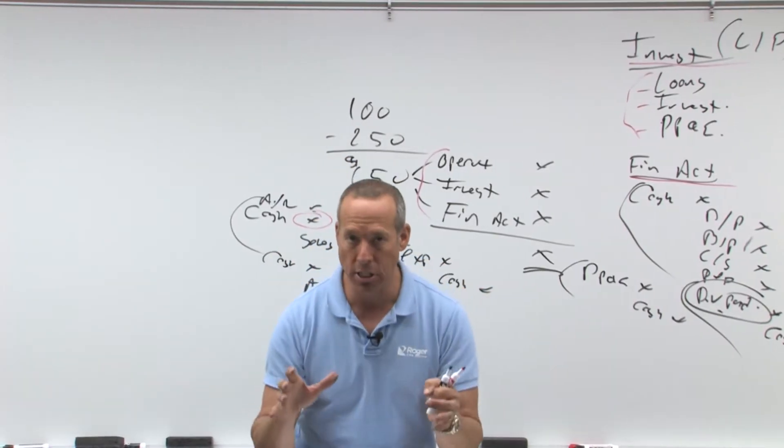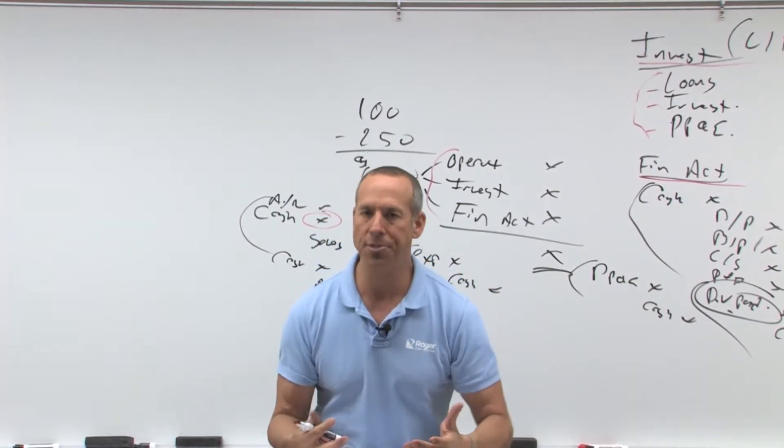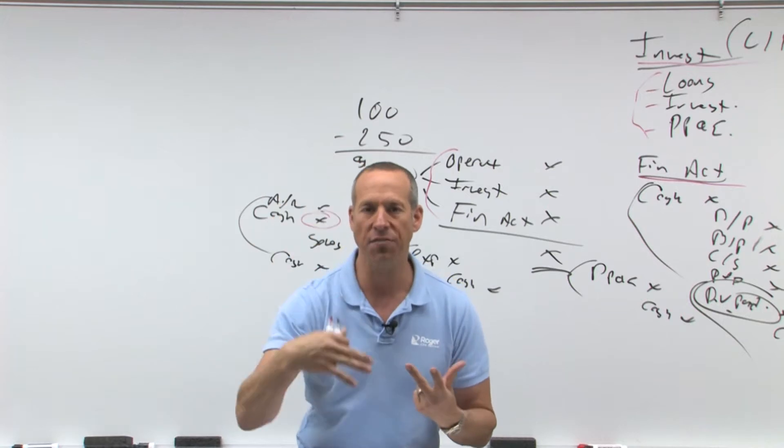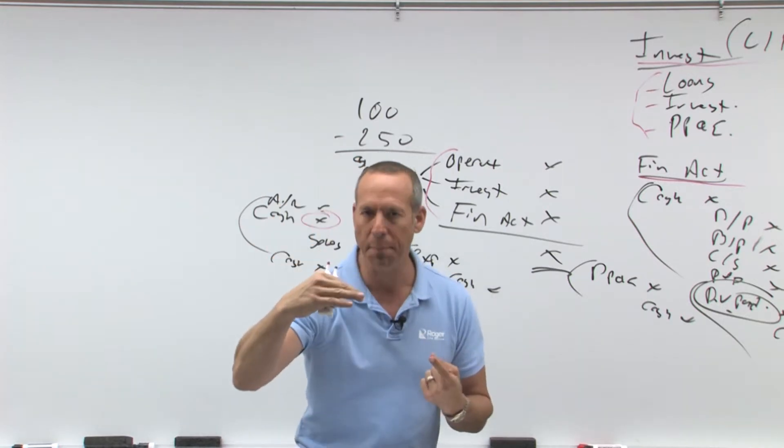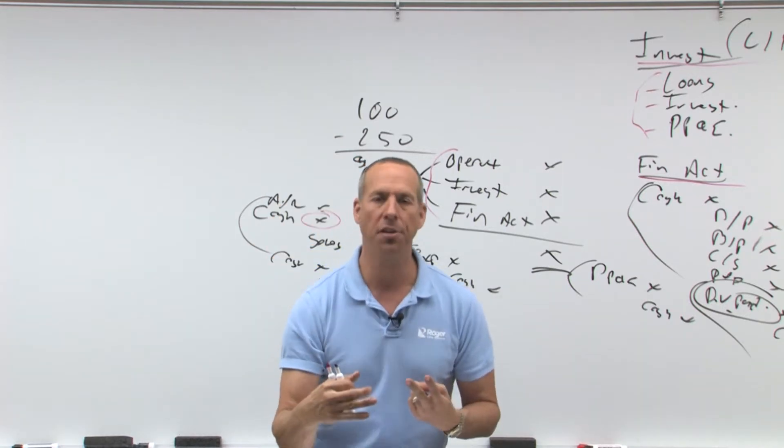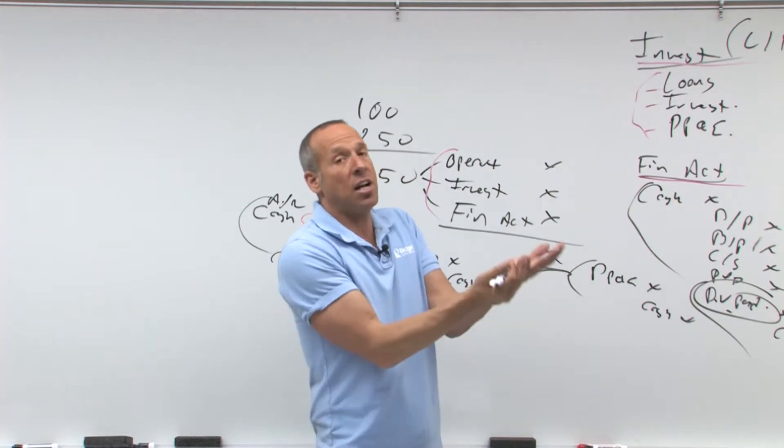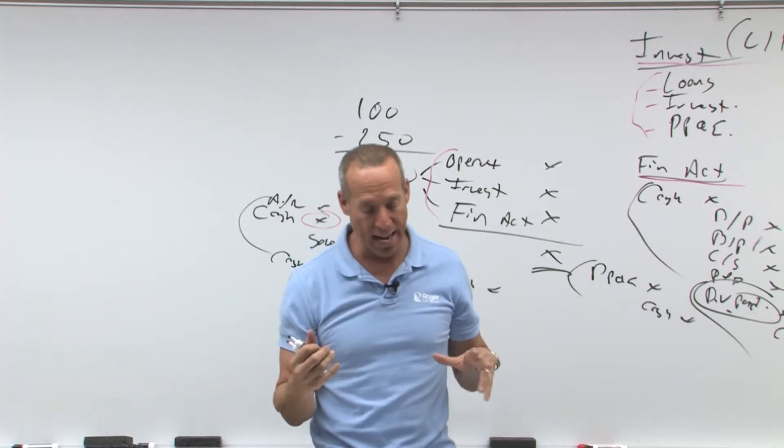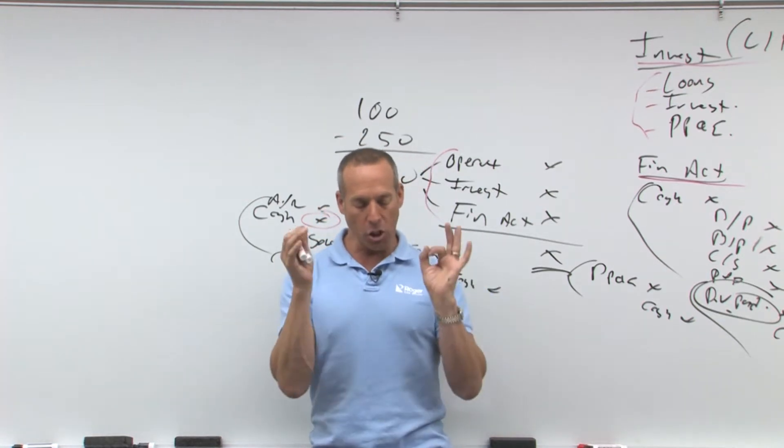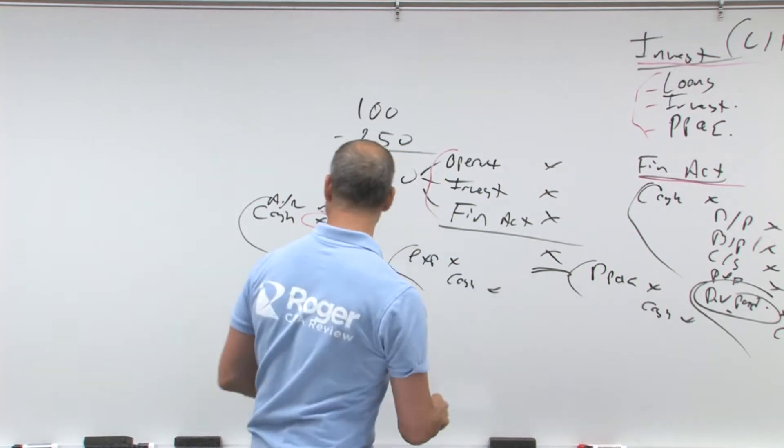Just to start out, we're trying to understand the basics. We've got a statement of cash flows with operating, investing, and financing. Investing is LIP, financing is very carefully defined. If it's not investing or financing, what is it everybody? Operating, which is kind of the catch all. A good way to think of this is as follows.